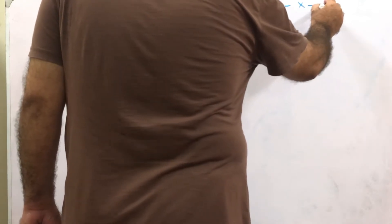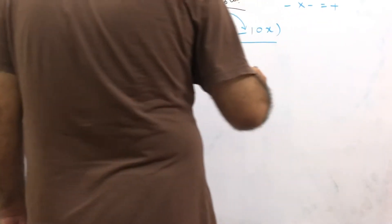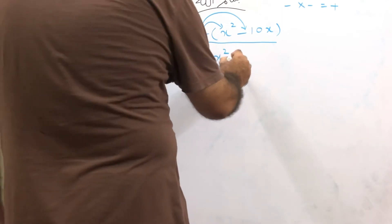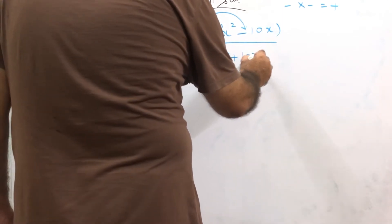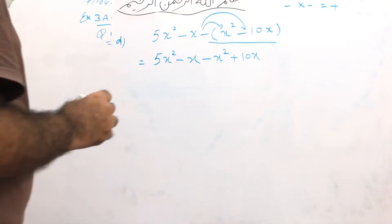Then again, this minus will be multiplied by this minus sign. Minus multiplied by minus is always equal to plus, so it becomes plus 10x. This is how we open the bracket.